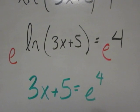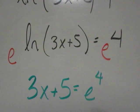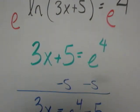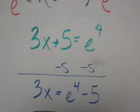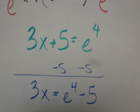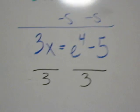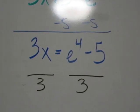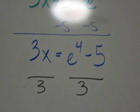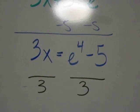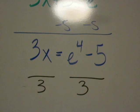Now it's a nice two-step algebra problem. Begin by subtracting 5 from both sides. Then you need to eliminate the 3 by dividing on both sides. You type that into your calculator — I would recommend putting some parentheses around your numerator or pressing equals before you hit divide.